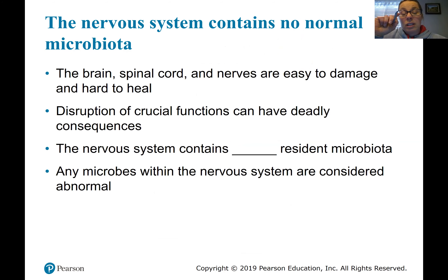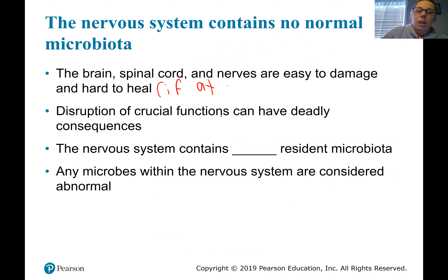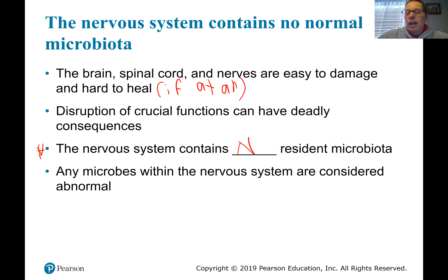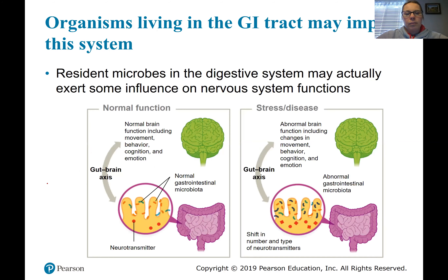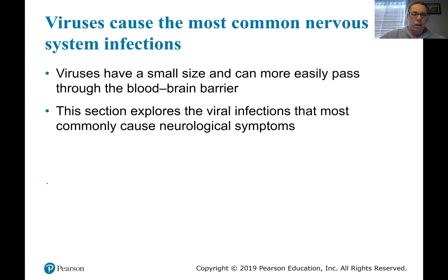The brain, the spinal cord, and nerves are easy to damage and take a lot to heal if they can heal at all. If you completely damage the spinal cord, it won't heal and function properly. Some serious infections of the nervous system can be deadly. Another important note is that the nervous system does not contain resident microbiota. The digestive system does, the upper respiratory and maybe even the lower respiratory, but not the nervous system. So any microbes in the nervous system at all is considered abnormal. If you were to do a lumbar puncture and it comes back with bacteria in it, there is an infection — that's not normal.